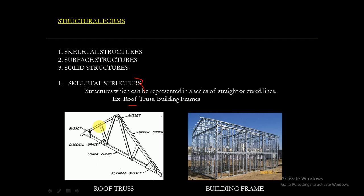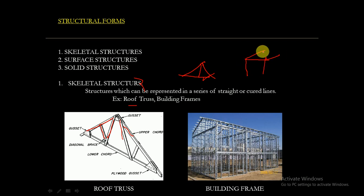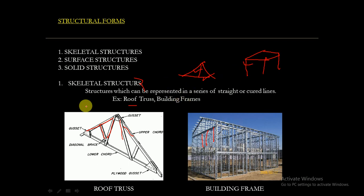For analysis purposes, we take these members as lines — 2D elements. A series of lines connected forms a truss; lines connected in another way form a frame. For analysis purposes, these members are considered as lines, so this series of lines is nothing but a skeletal structure. Examples are roof structures and building frames.